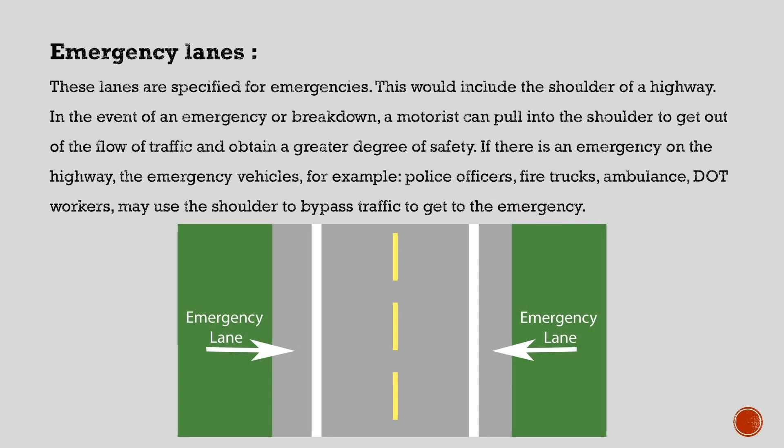Emergency lanes are specified for emergencies and include the shoulder of a highway. In the event of an emergency or breakdown, a motorist can pull into the shoulder to get out of the flow of traffic and obtain a greater degree of safety. If there is an emergency on the highway, emergency vehicles such as police officers, fire trucks, ambulances, or DOT workers may use the shoulder to bypass traffic and get to the emergency.